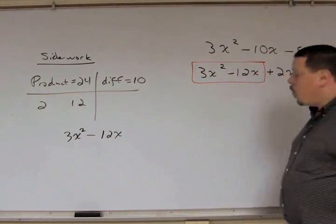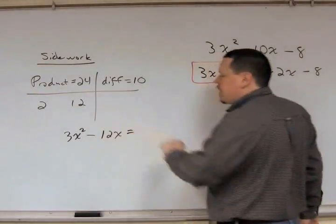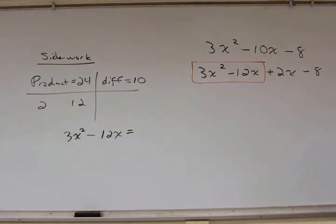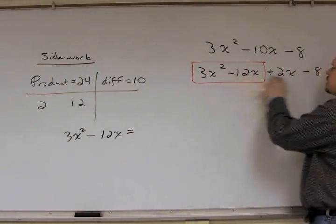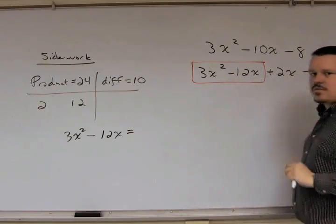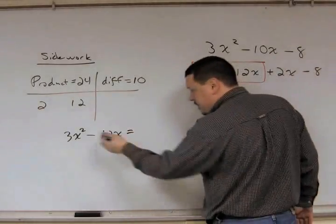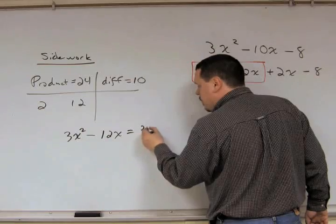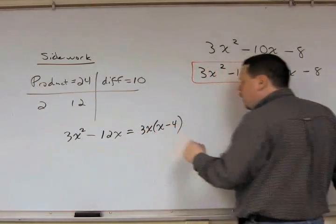Now, why would I do that? Well, 3x squared minus 12x. Our very next step here was to factor out the GCF of your first two terms and your last two terms. Now, I'm going to factor out the GCF of just these two, and we get 3x. And what do you have left over? x minus 4.